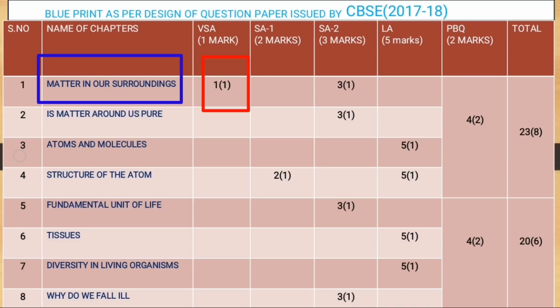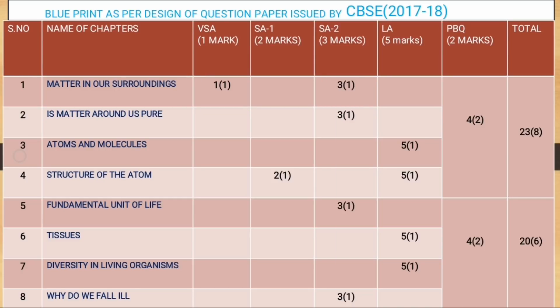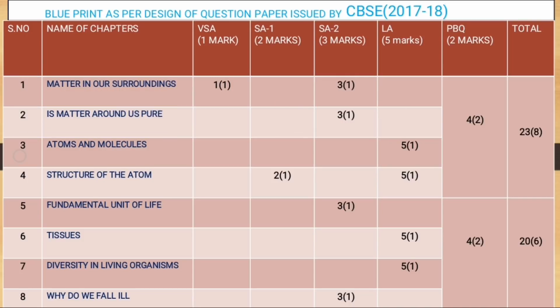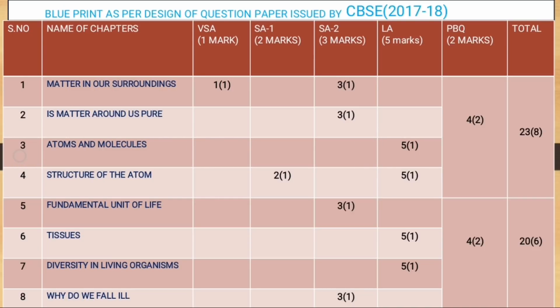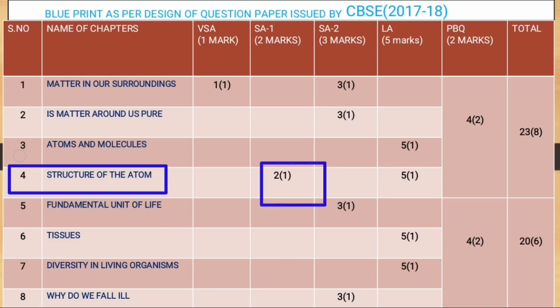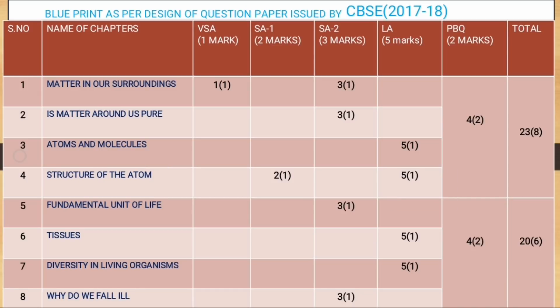From Chapter 1, Matter in Our Surroundings, there will be one question for one mark and one question for three marks. Chapter 2, Matter Around Us Pure, covers one question for three marks. Chapter 3, Atoms and Molecules, covers one question for five marks. Chapter 4, Structure of the Atom, covers one question for two marks and one question for five marks, with two questions for four marks from the practical book related to these four chapters.